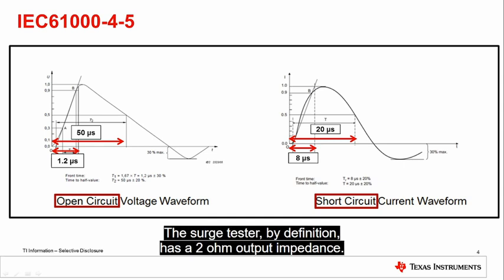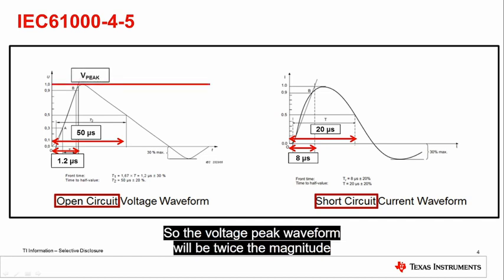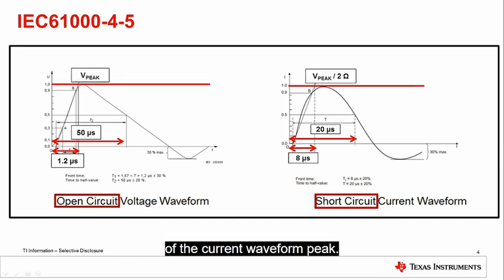The surge tester, by definition, has a 2 ohm output impedance, so the voltage peak waveform will be twice the magnitude of the current waveform peak.